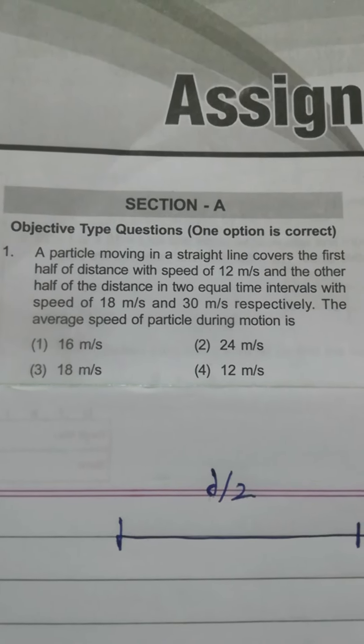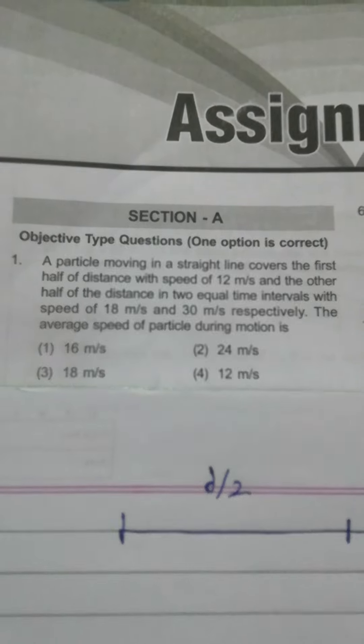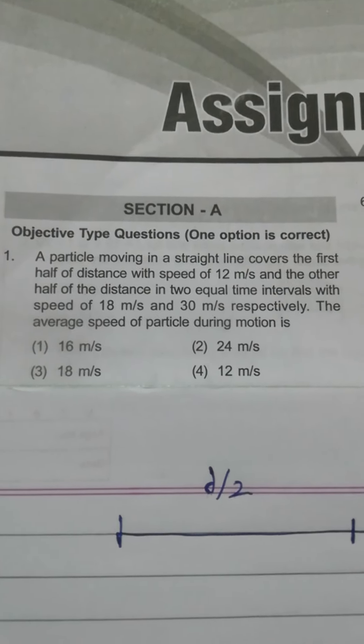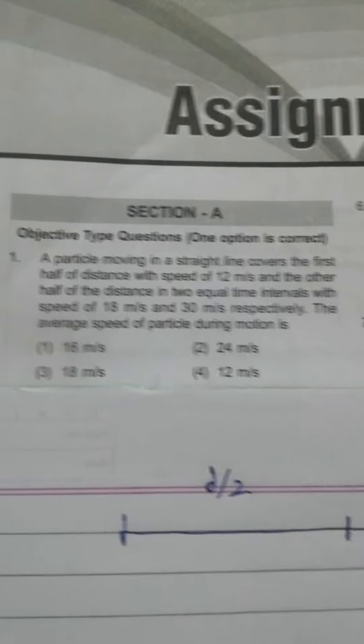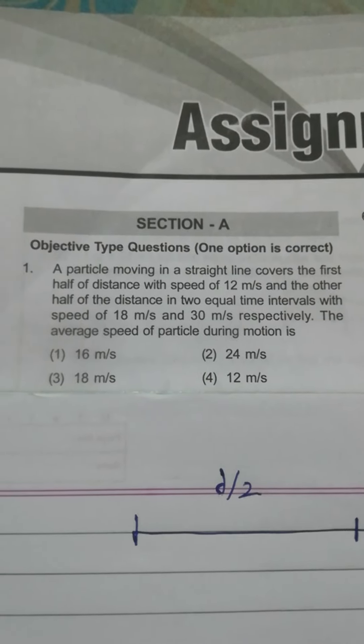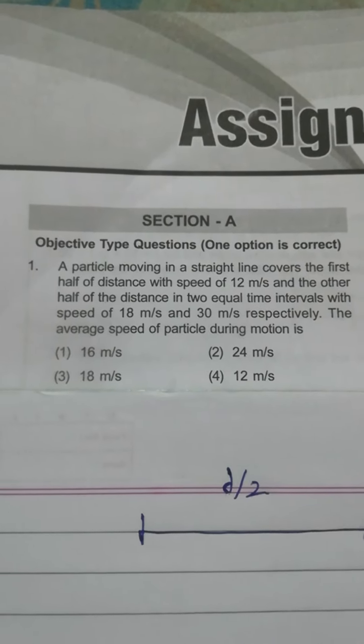We have the question where the first half of distance is covered with speed 12 meters per second, and another half of distance in 2 equal time intervals with speed of 18 meters per second and 30 meters per second.